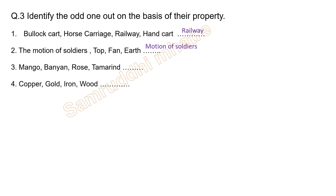Third group: mango, banyan, rose, and tamarind. Mango, banyan, and tamarind are trees, while rose is a shrub. So the odd one out is rose.